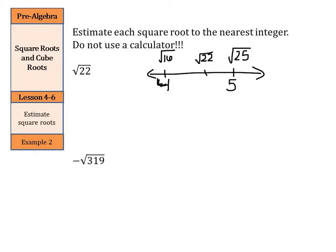Now, where does the square root of 22 fall with these numbers? We are about 3 away from 25, or about 6 away from 16. So where is it that we are closer? Well, we are closer to the square root of 25, so our estimate is going to be about 5.